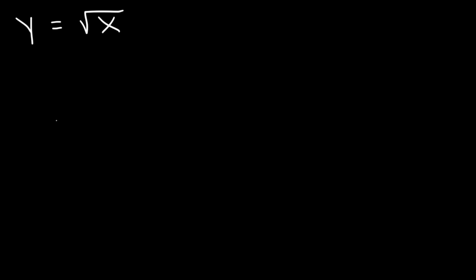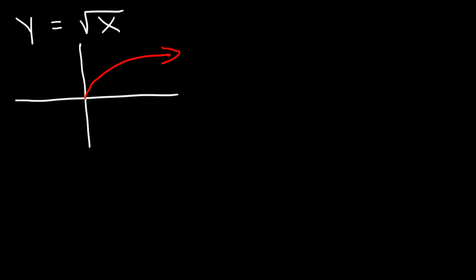In this lesson, we're going to talk about how to graph radical functions, particularly using transformations. Here's the parent function, the square root of x. It increases at a decreasing rate and it travels towards quadrant 1.